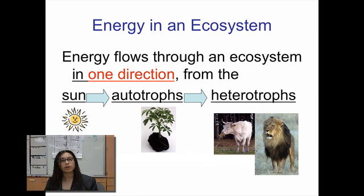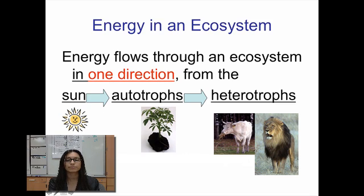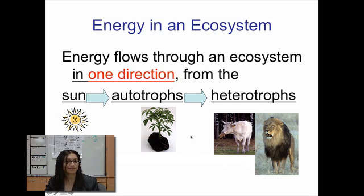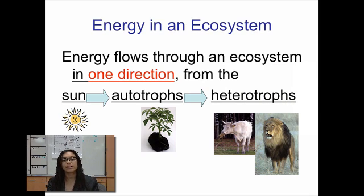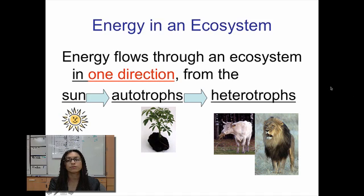Once energy enters an ecosystem, what happens to it? Energy comes from the sun, and autotrophs capture it during photosynthesis and trap it in glucose. When heterotrophs — like a cow — eat the plant, the energy is transferred to the cow. When the cow gets eaten, it's transferred to the lion. Energy moves through an ecosystem in one direction. Once it gets to the very end of the food chain and the lion is broken apart by decomposers, the energy is lost as heat and gases. That's why we say energy moves in one direction.